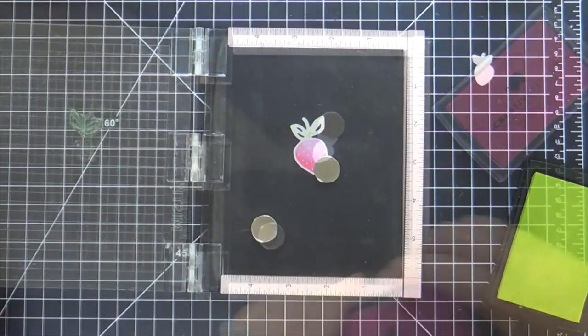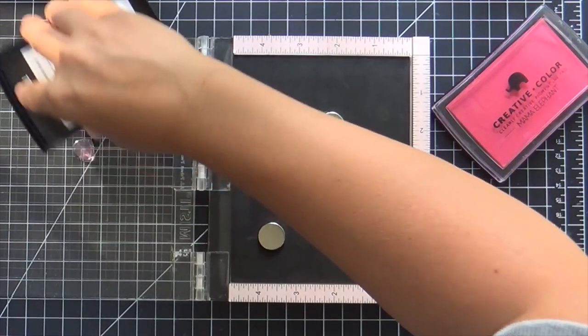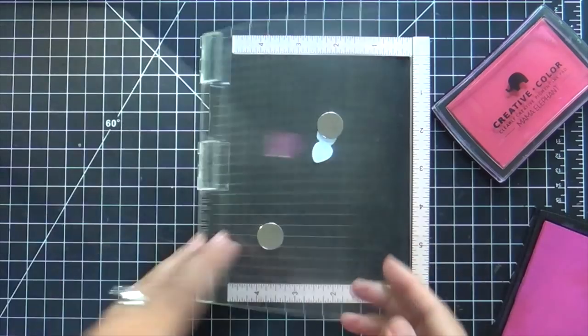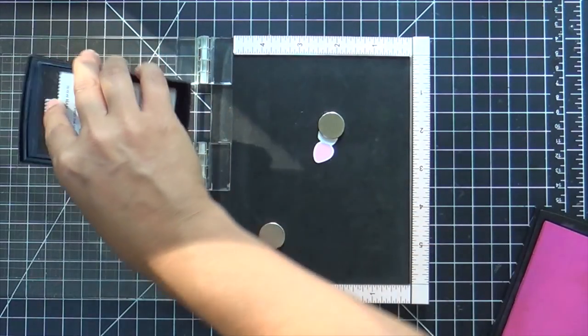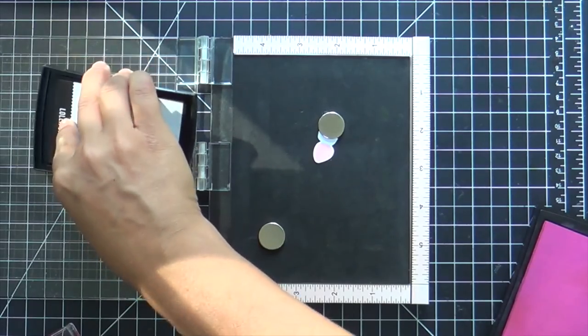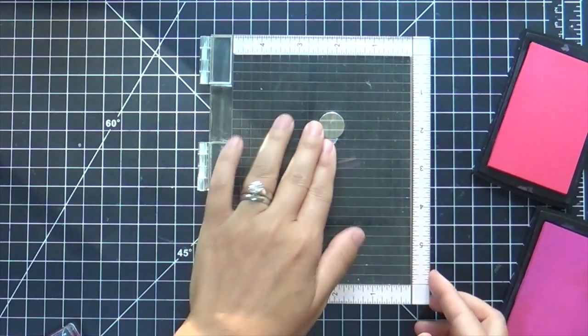But it gives you that nice dimensional look to your images. I mean, a flat inked up strawberry is pretty, but a gradient inked up strawberry is spectacular.